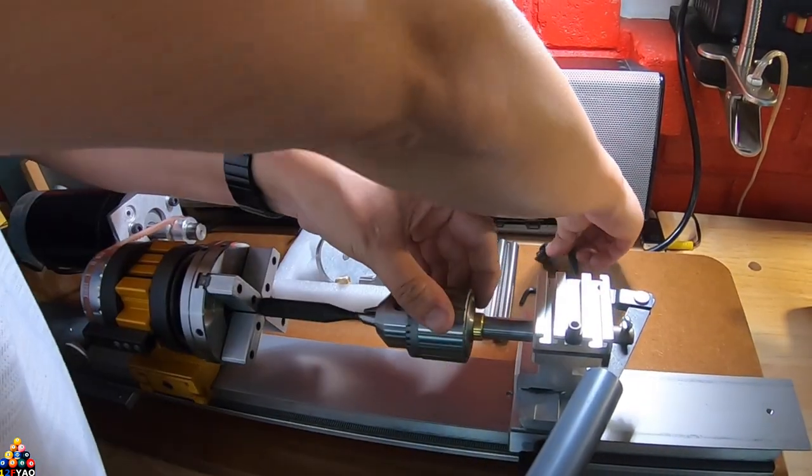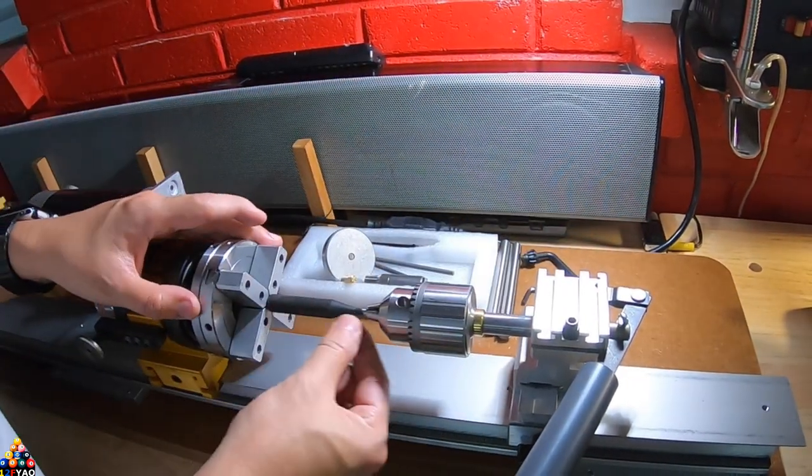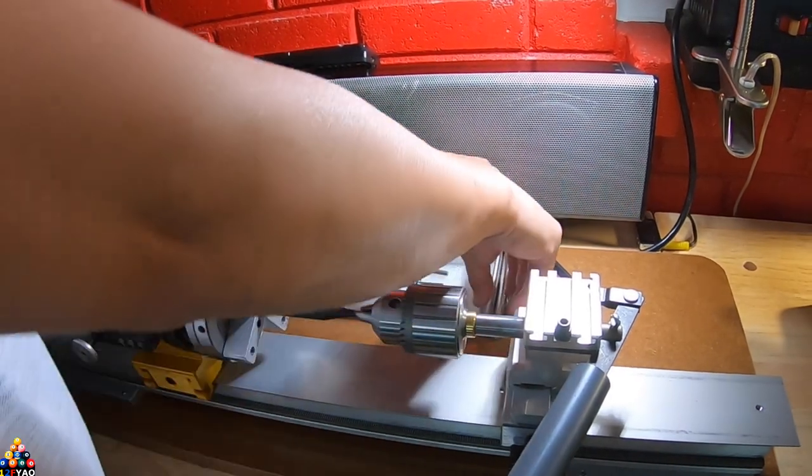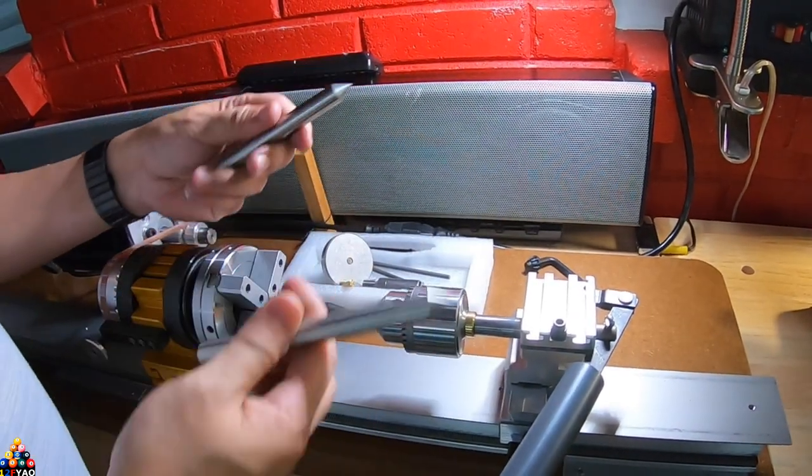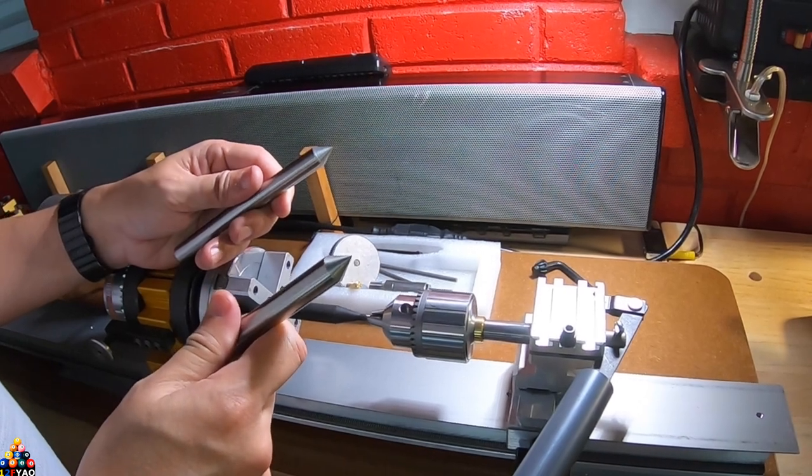So once that is tightened this should give you a rough estimate of center but the best way to actually do it is using dead centers. I'm gonna go ahead insert these and show you how accurate this lathe is.